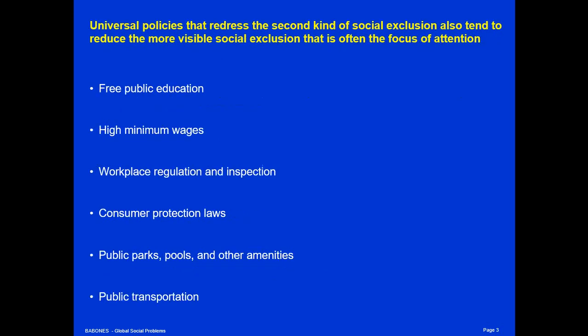The solution is universal social policies. Universal policies that redress that second kind of social exclusion also tend to reduce the more visible social exclusion that is usually the focus of our attention. For example, free public education helps reduce the social exclusion of someone who doesn't speak proper language by giving them 12 or 16 years of education in using proper language — so no matter what family you come from, everybody is exposed to how to speak standard proper language. But free public education also tends to reduce the gap between majority and minority populations or between men and women.